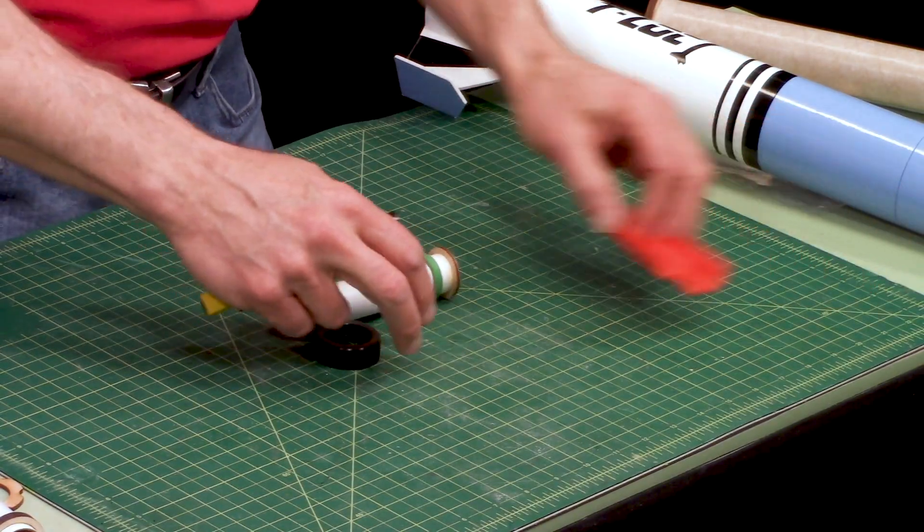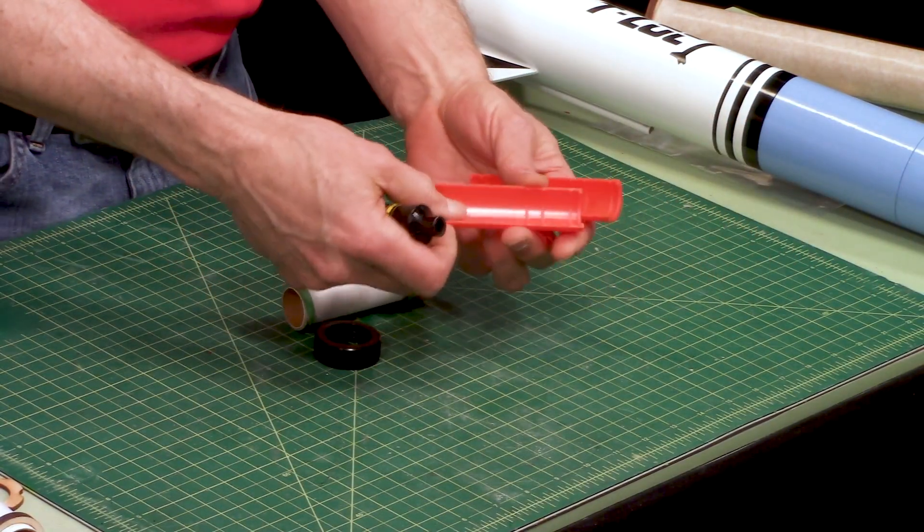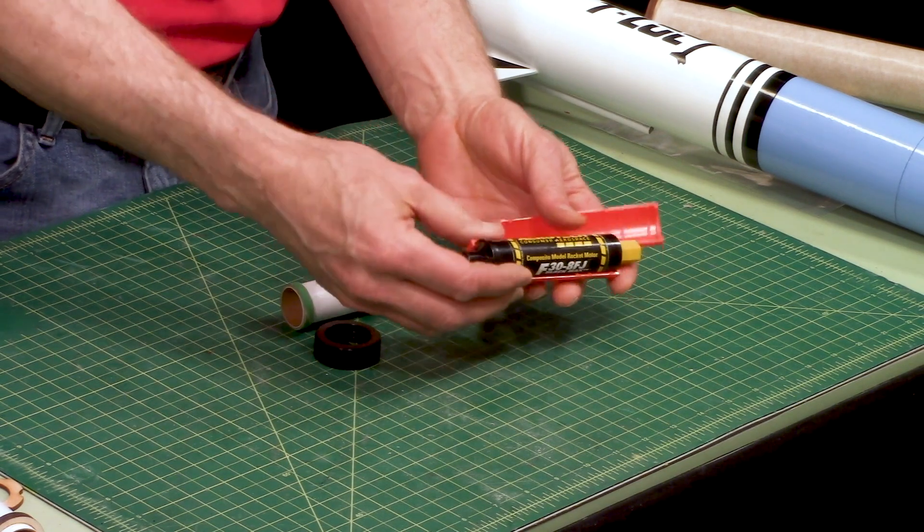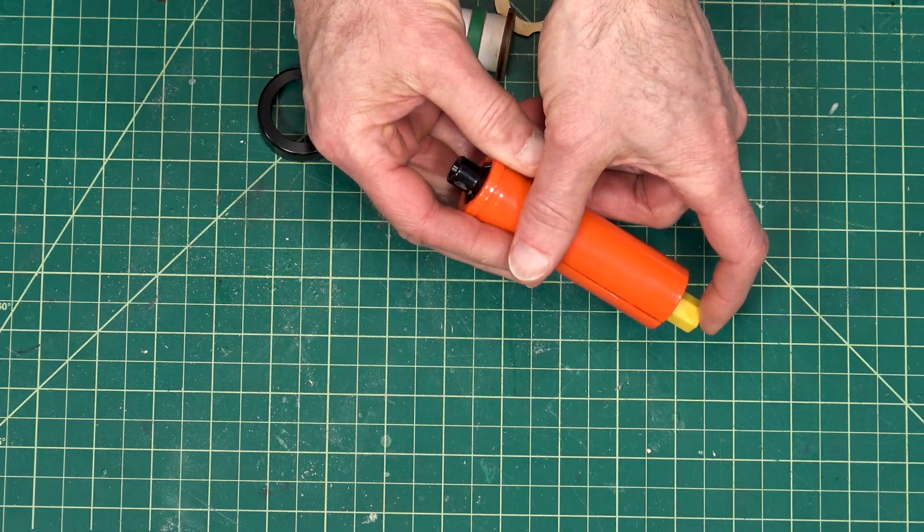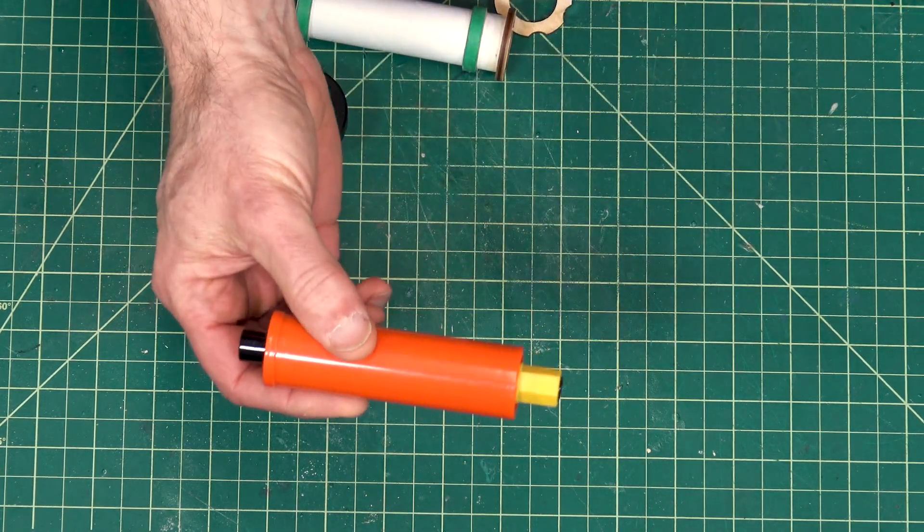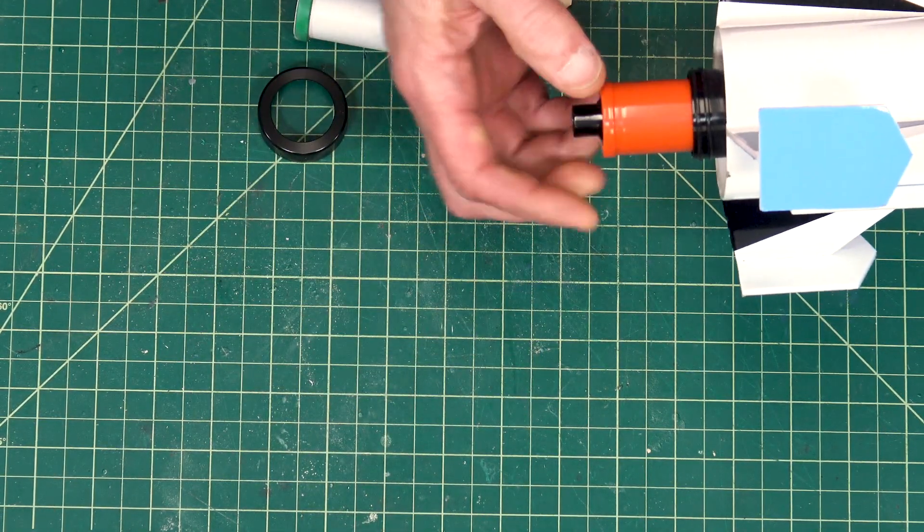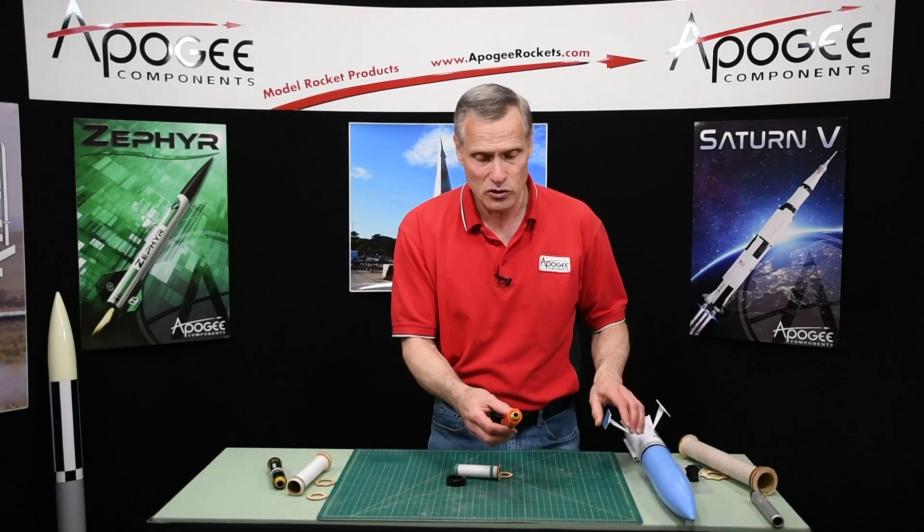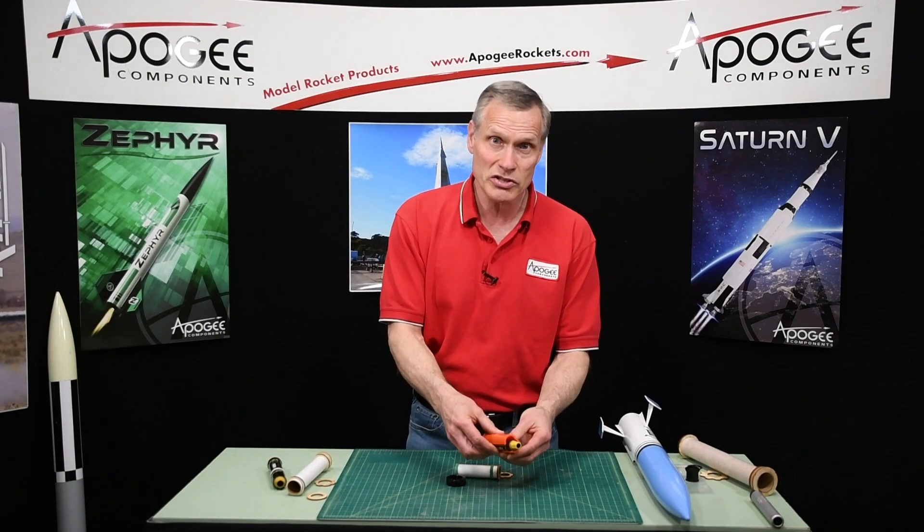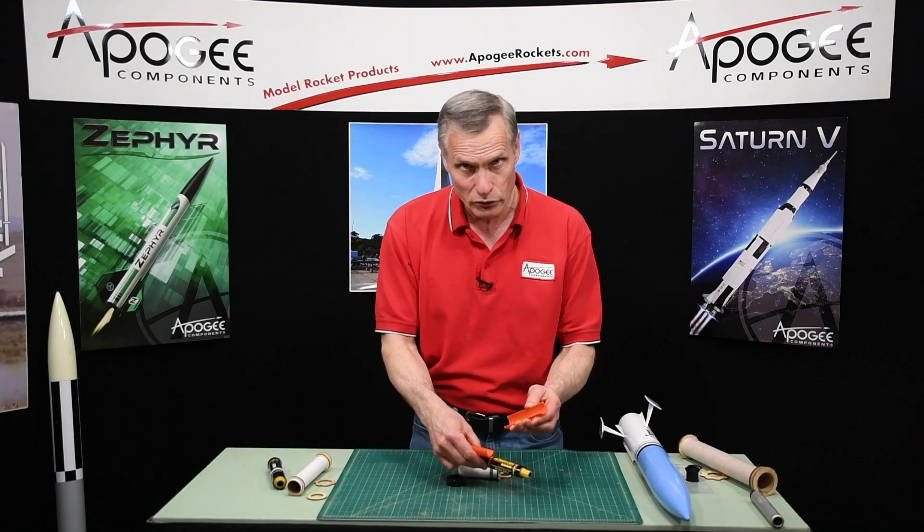We also have the Estes adapter system, which is this one here. It's a plastic system. You can just slide in your rocket motor into this and then it slides in and you can hold it in that way. The problem with this one though is that engines that are really long won't fit into it.